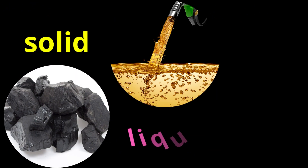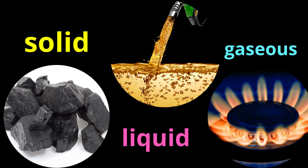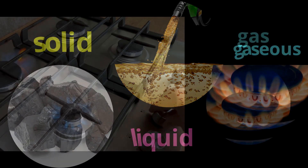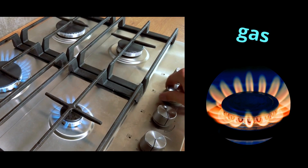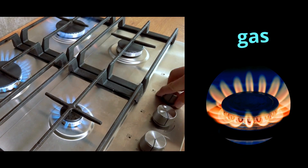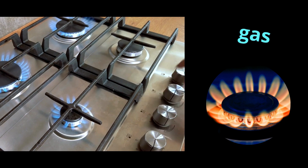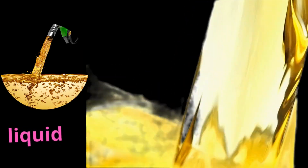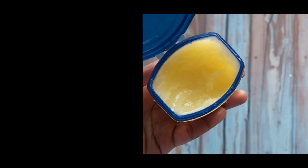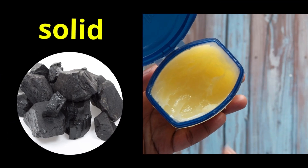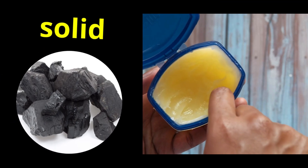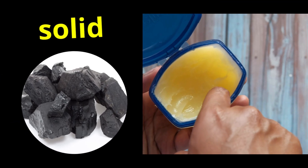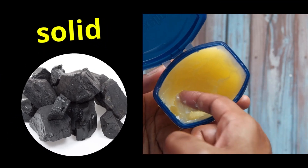Hydrocarbons can be found in different states of matter. Natural gas, for example, is a mixture of hydrocarbons in a gaseous state, while crude oil is a mixture of hydrocarbons in a liquid state. Some hydrocarbons, like paraffin, can exist in a solid state at room temperature.